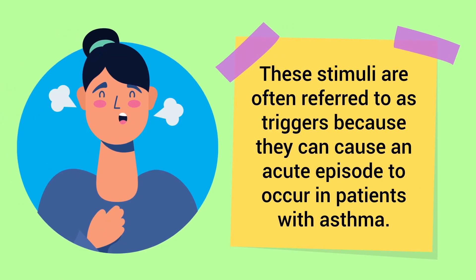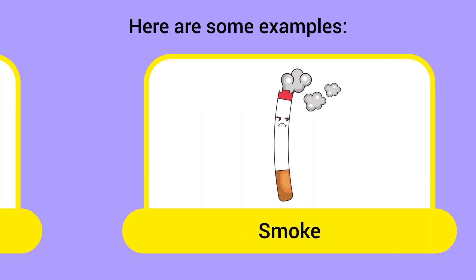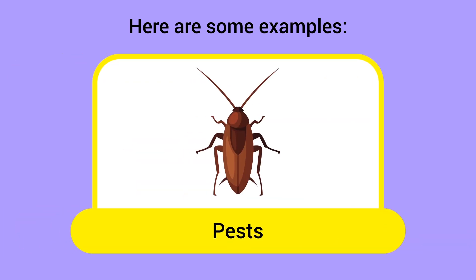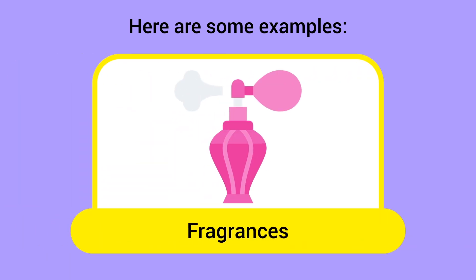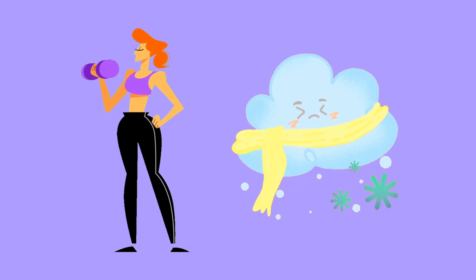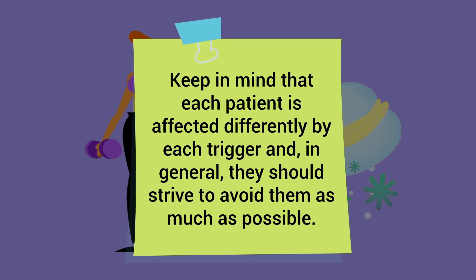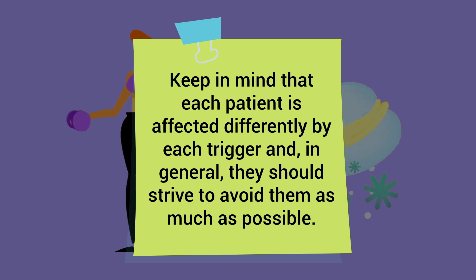These stimuli are often referred to as triggers because they can cause an acute episode to occur in patients with asthma. Here are some examples: pollen, grass, dust, smoke, mold, pollution, pest cleaning supply chemicals, pet dander, and fragrances. Other things such as physical exercise and even breathing in cold air can trigger an episode as well. Keep in mind that each patient is affected differently by each trigger, and in general they should strive to avoid them as much as possible.